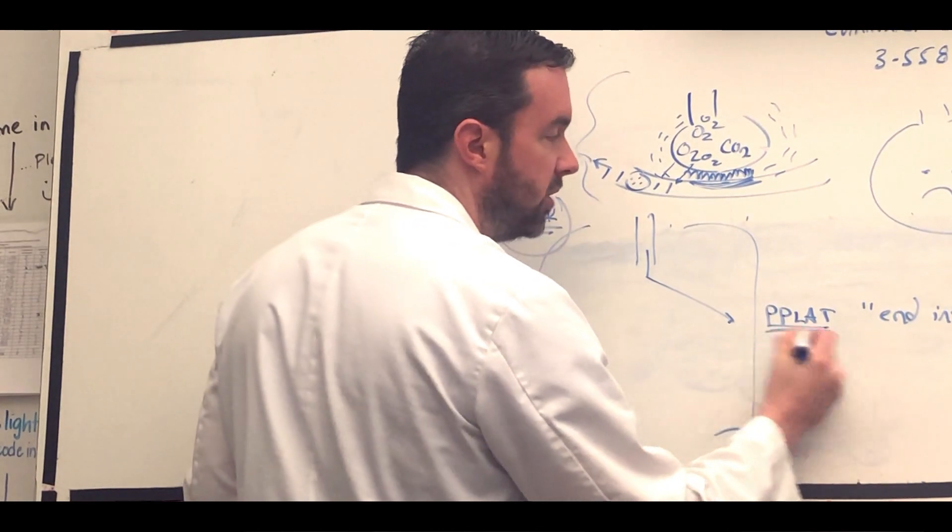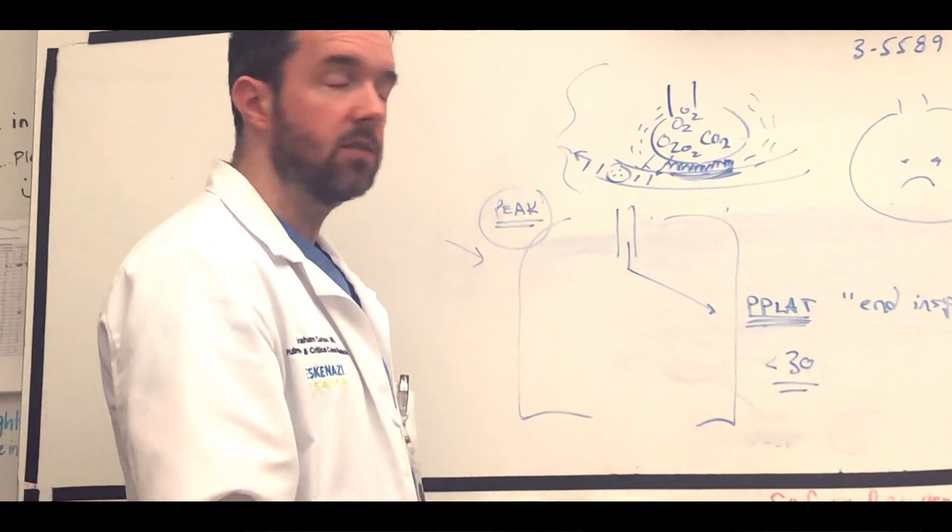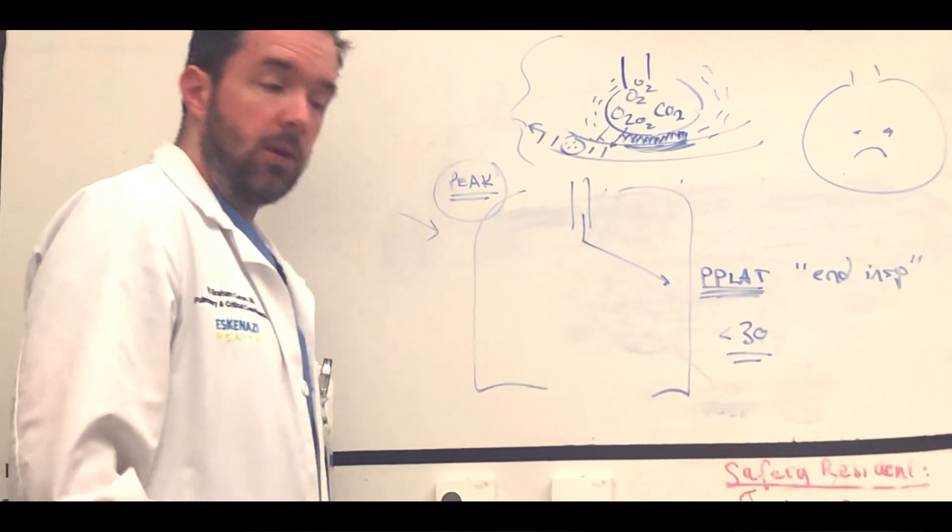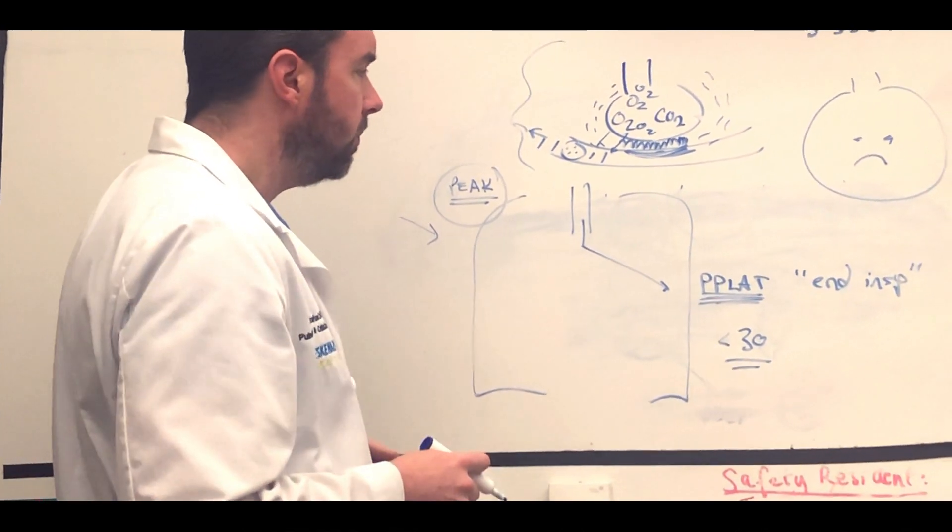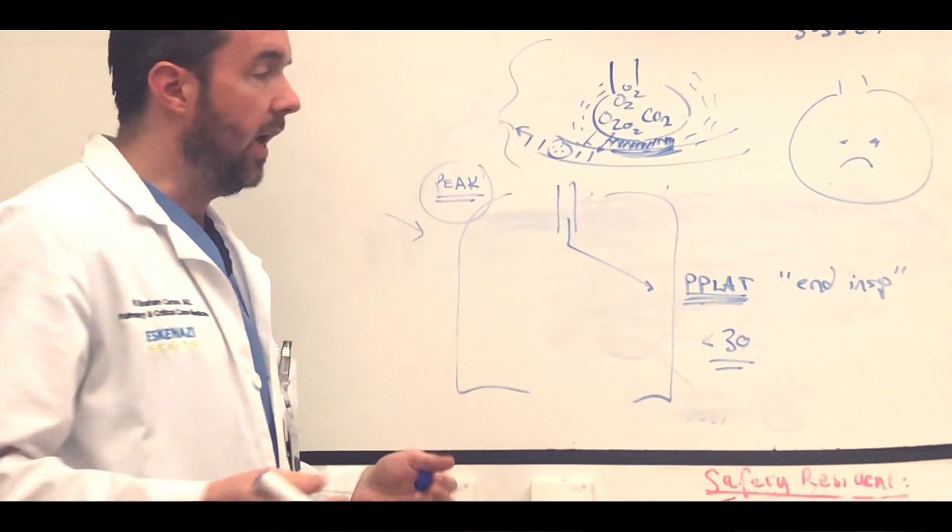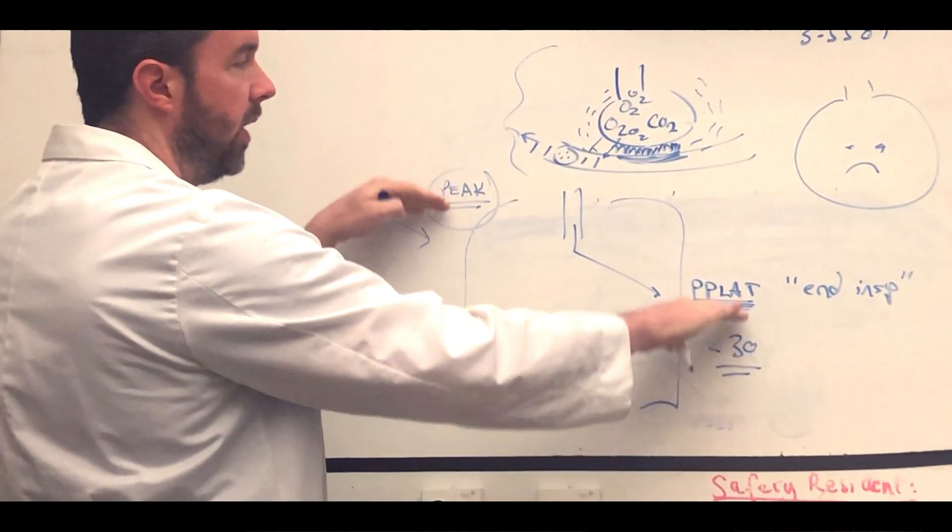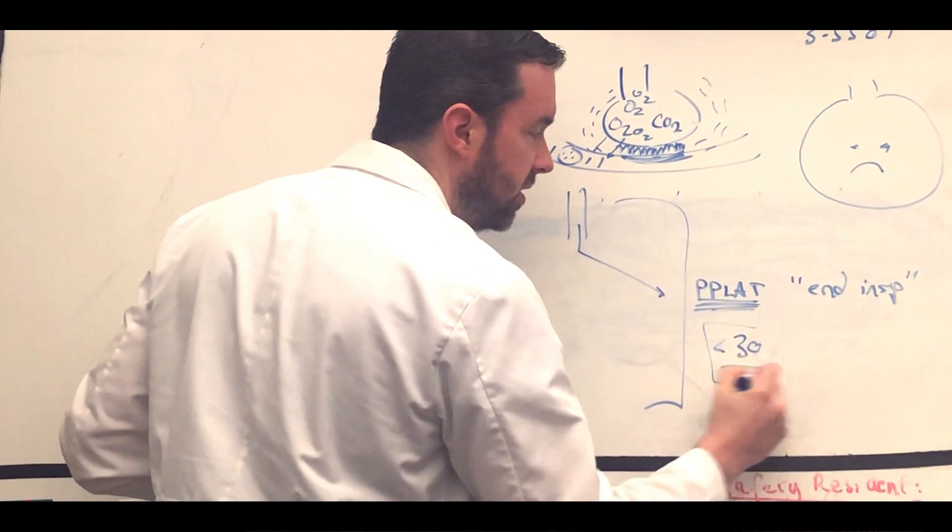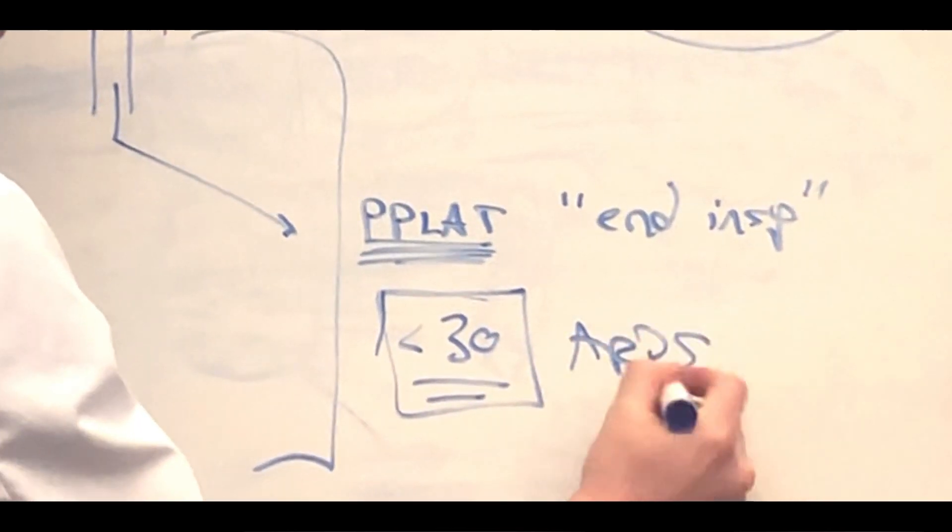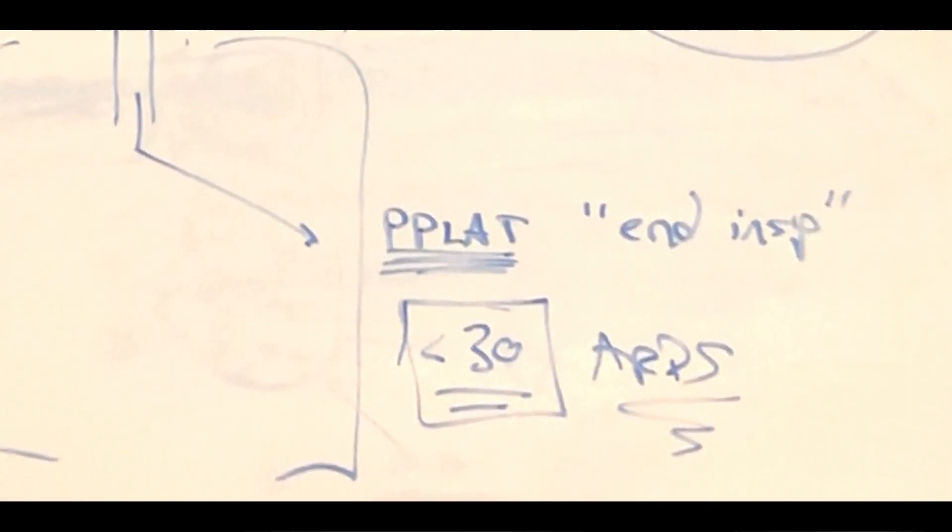On the flip, things that would elevate the plateau pressure would include things like ARDS, a big pneumothorax, obesity with the belly and abdominal contents pushing up against the thorax, pulmonary edema, anything that affects stretchability. Fibrosis of the lungs would elevate the plateau and correspondingly the peak. The plateau, especially this number 30 in ARDS, is one of the key metrics we often aim to achieve to make sure we're safely ventilating these patients.